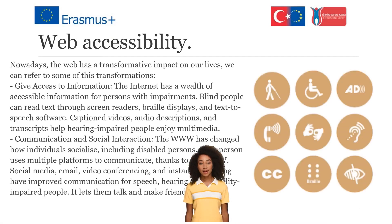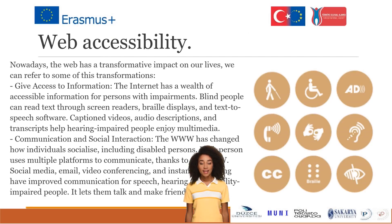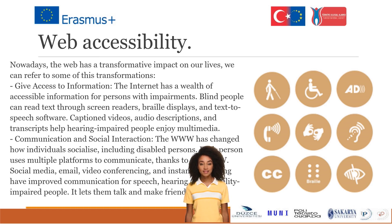Nowadays the web has a transformative impact on our lives. Access to information: the internet has a wealth of accessible information for persons with impairments. Blind people can read text through screen readers, braille displays, and text-to-speech software. Captioned videos, audio descriptions, and transcripts help hearing-impaired people enjoy multimedia.